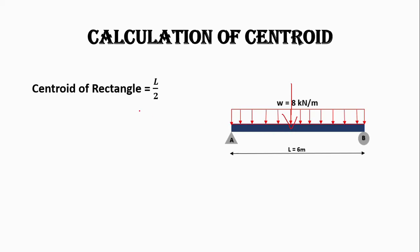For the centroid of rectangle, the formula is L by 2. The centroid will be 3 meters in this case. It means the load will act from the center of the beam.